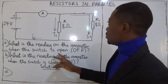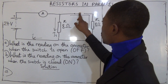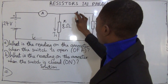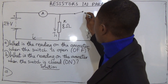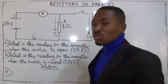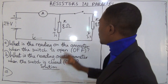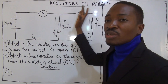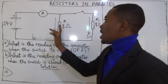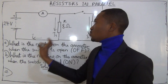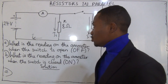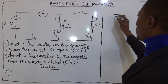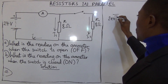When the switch is open — this is the switch — that means this entire right-hand side of the circuit is completely isolated. This is what we have left in the circuit. The circuit looks just like this: 24 volts.